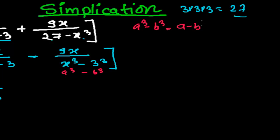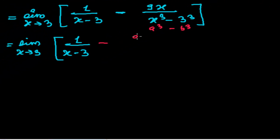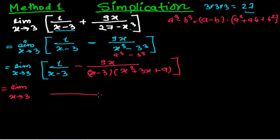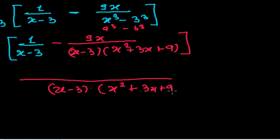We know the formula: a cubed minus b cubed equals a minus b times a squared plus ab plus b squared. So applying this formula: a minus b gives x minus 3, times a squared is x squared, plus ab is x times 3 which is 3x, plus b squared which is 3 squared, that is 9. Now, taking the LCM, the denominator becomes x minus 3 times x squared plus 3x plus 9, and x minus 3 cancels with x minus 3.